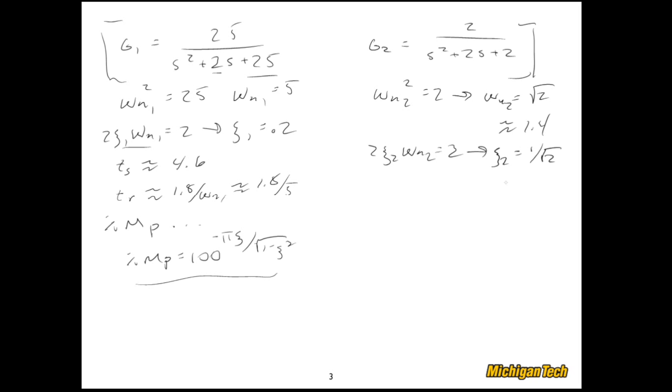2 zeta 2 omega n2 is equal to 2, and what that tells us is zeta 2 is equal to 1 over square root of 2, which is about 0.7. TS is then, let's see, it would be 4.6 over zeta omega n. Zeta omega n is 1 again, so it's 4.6, exactly the same that we had over here. Now of course those are approximations. The rise time is 1.8 over about 1.4, so pretty close to one second.